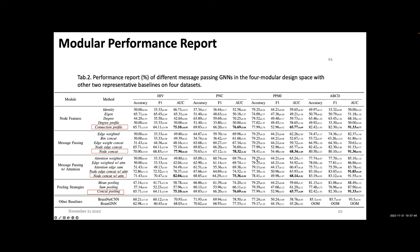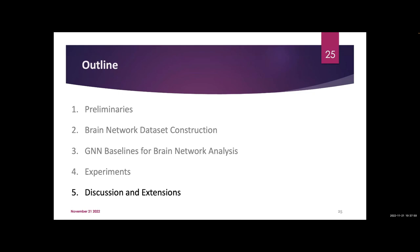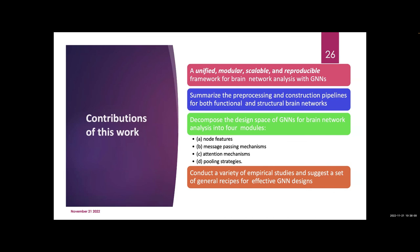The contribution of this work is defining a pipeline that standardizes the pre-processing of brain imaging datasets, and a modular, scalable, and reproducible graph neural network analysis. Construction pipelines are defined for two modalities: functional and structural brain MRIs. They define four types of modules: node features, message passing mechanism, attention mechanism, and pooling strategies. This can serve as a baseline for all graph neural networks, reproducible across the four types of datasets, and extensible to different tasks and datasets that researchers want to use.